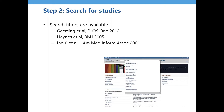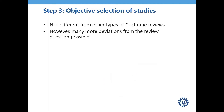Step three is objective selection of studies. We have not yet written explicit guidance for this step, as it is not clearly different from other types of reviews including Cochrane reviews. However, there are more possible deviations from the review question when selecting prognosis studies, and these are addressed in the critical appraisal step where questions about applicability are also asked.